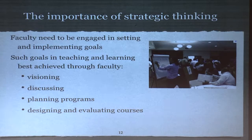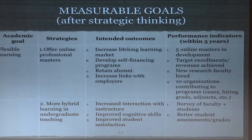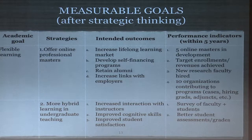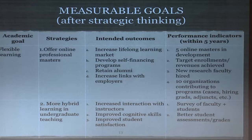You can put measurable goals down to something like this: take a broad academic goal like making learning more flexible for students. Then you have strategies — offer online professional master's programs, more hybrid learning in undergraduate teaching. Then you identify the intended outcomes: increase the lifelong learning market, develop self-financing programs, retain alumni, and increase links with employers. Then you can have performance indicators against that. But that comes after the strategic thinking — you've got to have the strategic thinking first.